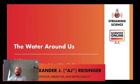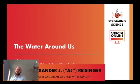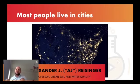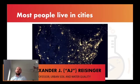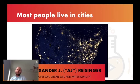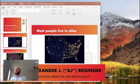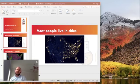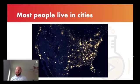The title of today's presentation is The Water Around Us. I like to start any presentation focused on water quality and human activities by highlighting the fact that most people these days live in cities. This is a nighttime sky view of the continental United States — what you see in white and yellow are street lights, house lights, and any nighttime lighting. Back in about the 1950s, the majority of the United States population began living in cities. In the 2000s, the entire global population transitioned to a majority urban city-dwelling population.